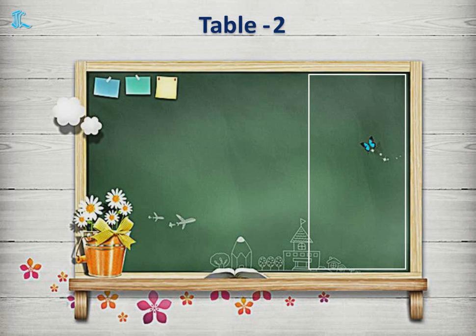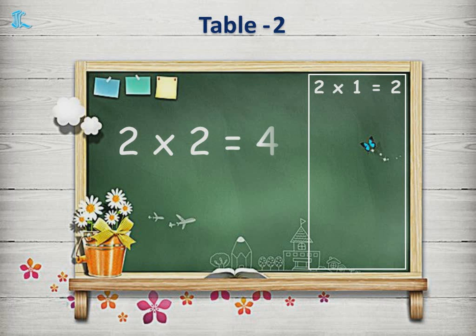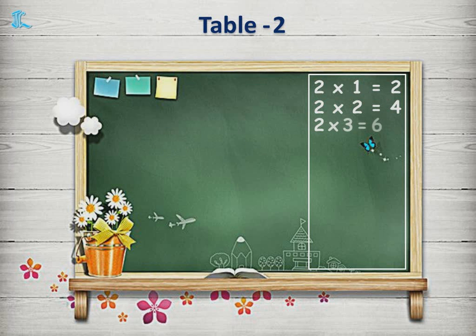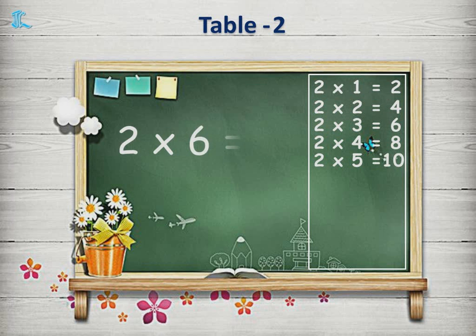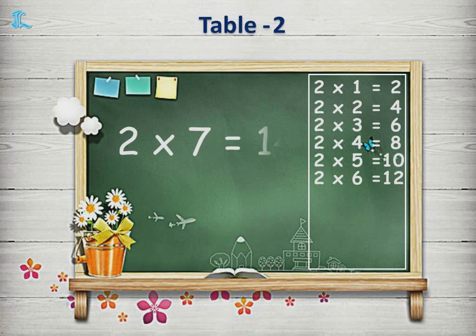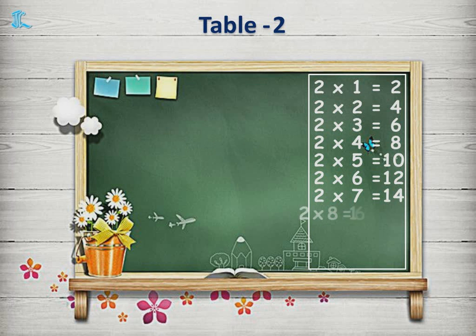Multiplication Table 2. 2 1s are 2. 2 2s are 4. 2 3s are 6. 2 4s are 8. 2 5s are 10. 2 6s are 12. 2 7s are 14. 2 8s are 16. 2 9s are 18.